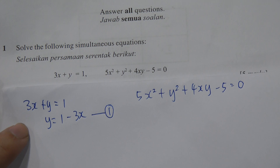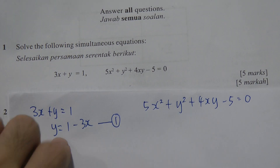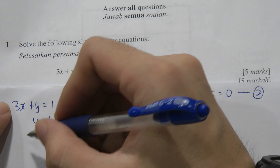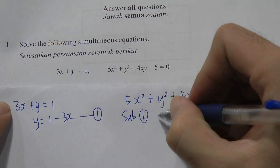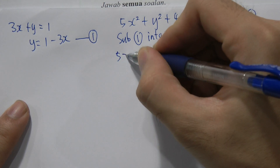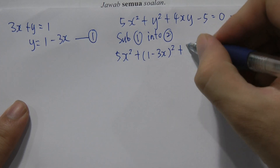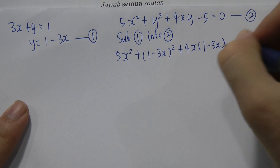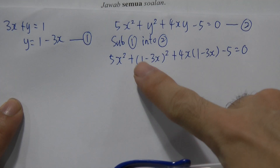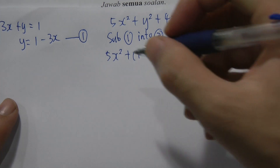This is a five-mark question, so I think most students can score here. You just substitute y into equation two. Substituting equation one into equation two: 5x² + (1 - 3x)² + 4x(1 - 3x) - 5 = 0. I substitute all the y terms with (1 - 3x).